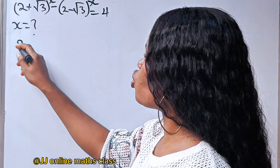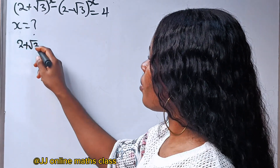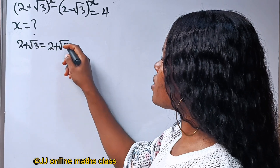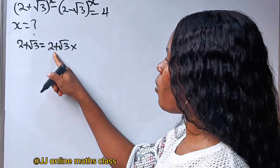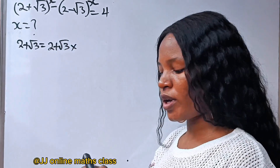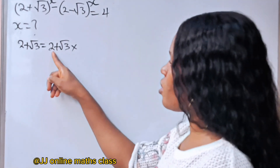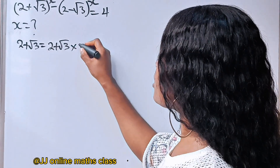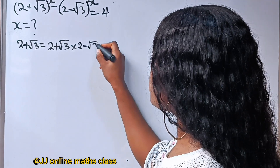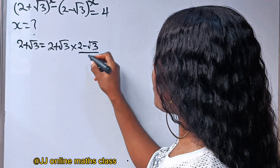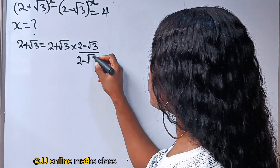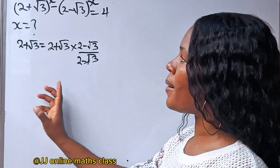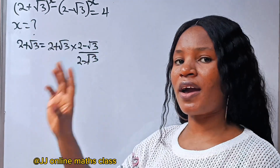So, 2 plus root 3 — let's multiply it by its conjugate. The conjugate of 2 plus root 3 is 2 minus root 3. So let's multiply it by 2 minus root 3 divided by 2 minus root 3. The essence is to introduce difference of two squares, thereby simplifying the question.